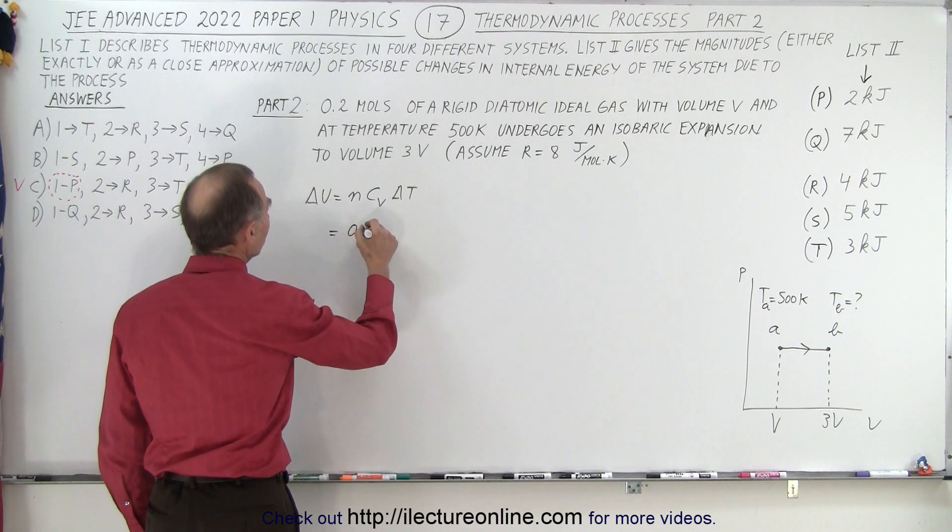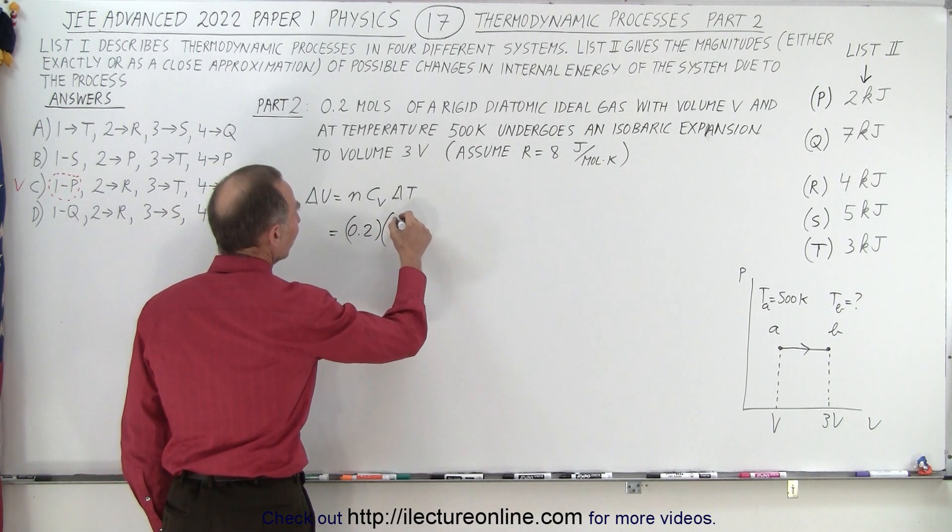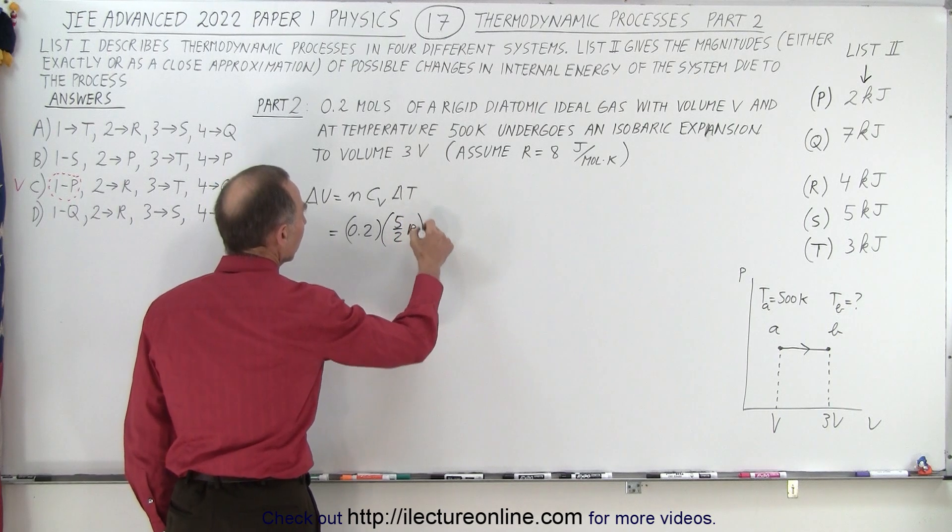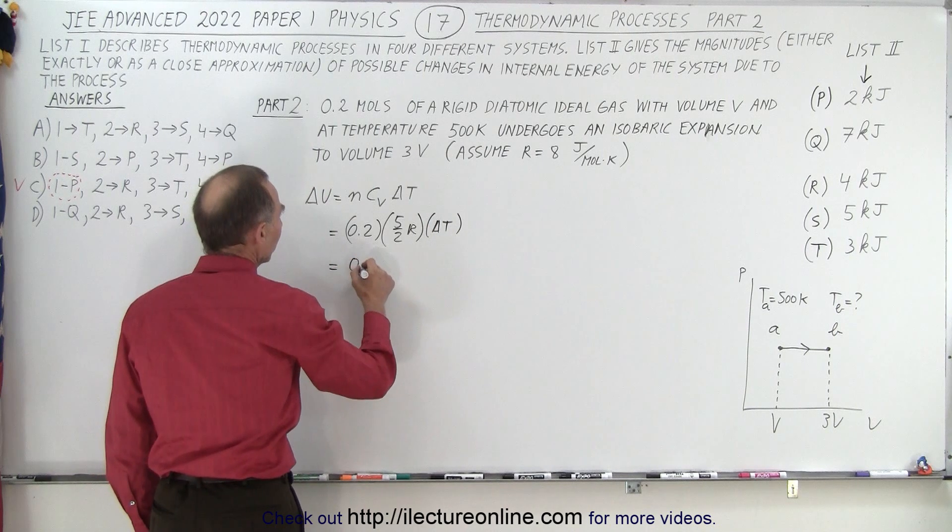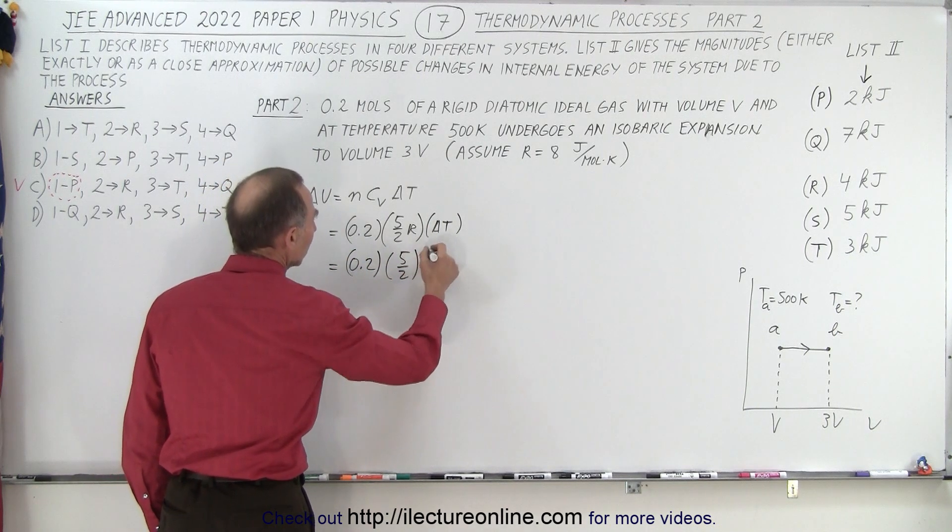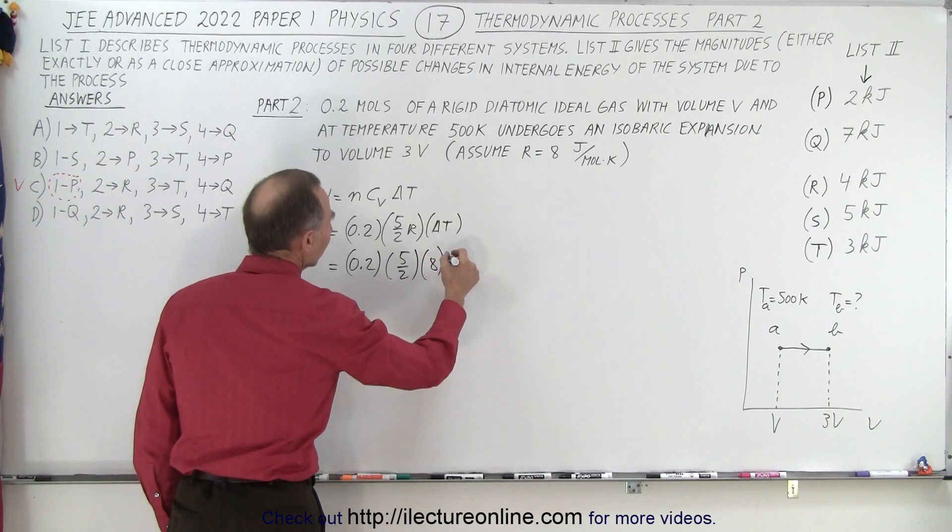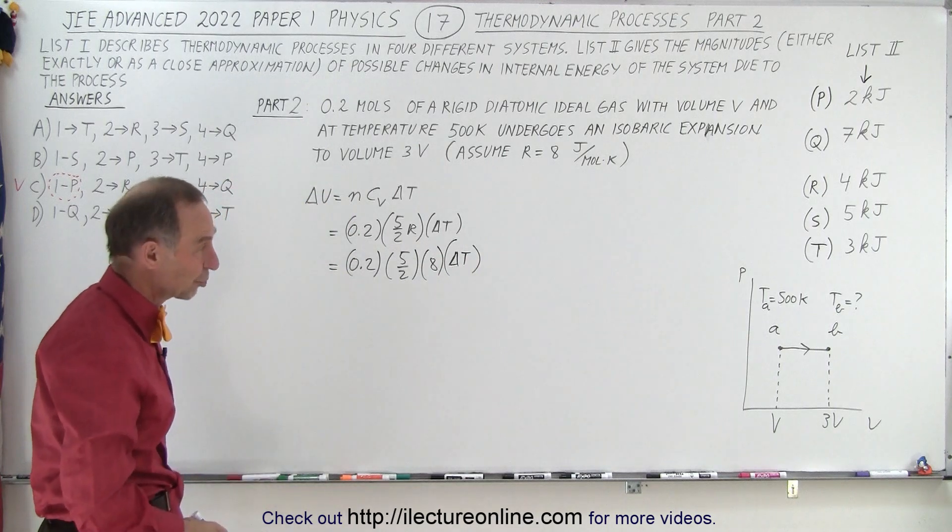So this would be equal to 0.2. C sub V for a diatomic gas is 5 over 2 R, N times delta T, so that means that this is equal to 0.2 times 5 over 2 times R, which is 8, times delta T. So the only thing left to do here is find the change in temperature.